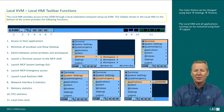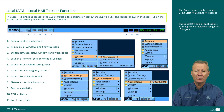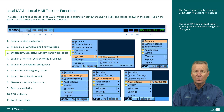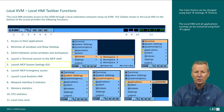The local HMI provides access to the G500 through a local substation computer setup via KVM, or keyboard, video, and mouse. The taskbar shown on the local HMI at the bottom of the screen provides the following functions: one, access to start applications; two, minimize all windows and show desktop; three, switch between active windows and workspaces; four, launch a terminal session to the MCP shell; five, launch the MCP system settings GUI — note you should only have one instance across all workspaces.